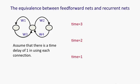So the diagram shows a simple recurrent net with three interconnected neurons. We're going to assume there's a time delay of one in using each of those connections and that the network runs in discrete time, so there's a clock that has integer ticks.